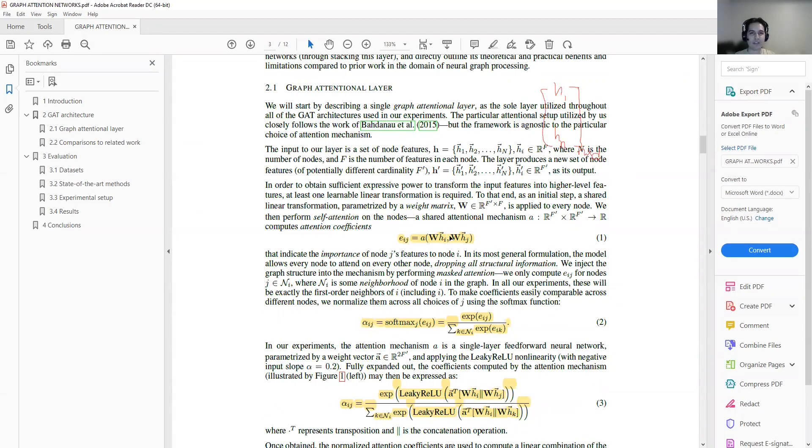So the formulation of the graph attention network is defined here. Suppose the input to our layer is a set of nodes. We have some embeddings. N is the number of nodes and F is the number of features in each node. The layer produces a new set of nodes features. After updating, we want to create a new updated set of features as the output. In order to obtain sufficient expressive power to transform the input features into higher level features, at least one learnable linear transformation is required.